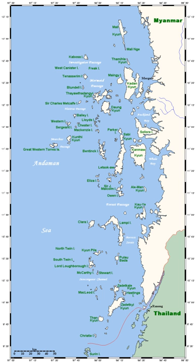Oceanic islands are mainly of volcanic origin, and widely separated from any adjacent continent. The Hawaiian Islands and Easter Island in the Pacific, and Eel Amsterdam in the South Indian Ocean are examples.